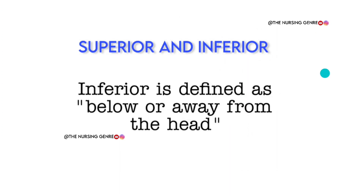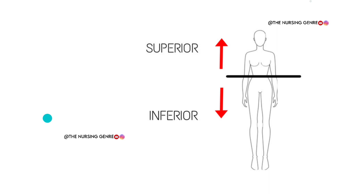Whereas inferior is defined as below or away from the head. The eye is far from the head — the eye is inferior. Look at this picture: the superior is towards the head, and the inferior is lower, away from the head.